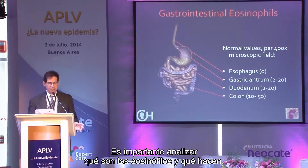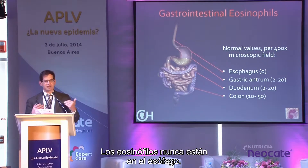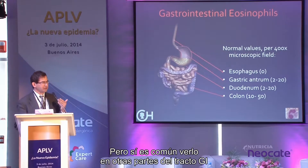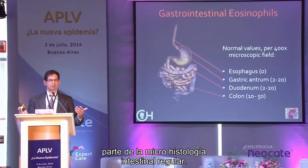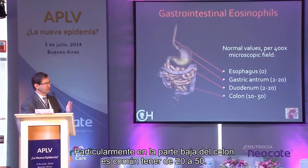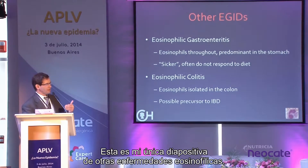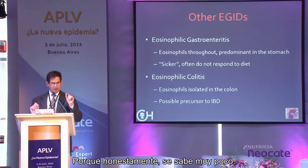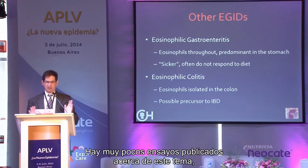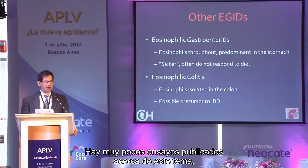Eosinophils are never normally found in the esophagus, but they are common in other parts of the GI tract and are a normal part of intestinal histology. Particularly in the lower colon, it is very common to see 20 to 50 eosinophils. Very little is known about the other eosinophilic disorders — there are only a few case reports, and they are very rare.